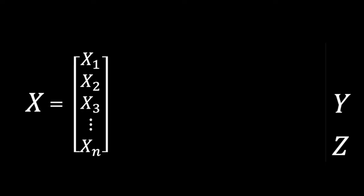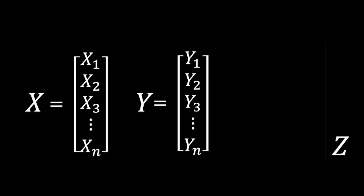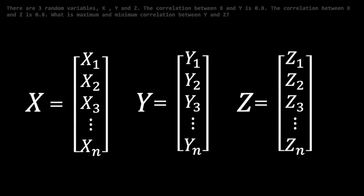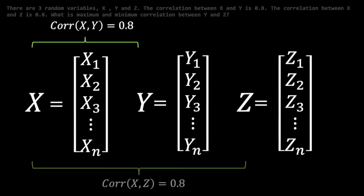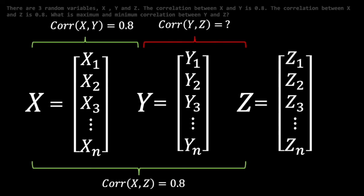We have three random variables x, y, and z. We know the correlation between x and y, and the correlation between x and z. But we are missing the correlation between y and z. What we have, and also lack, are pairwise correlations. When considering correlations between multiple random variables, all possible pairwise correlations can be represented as a matrix.